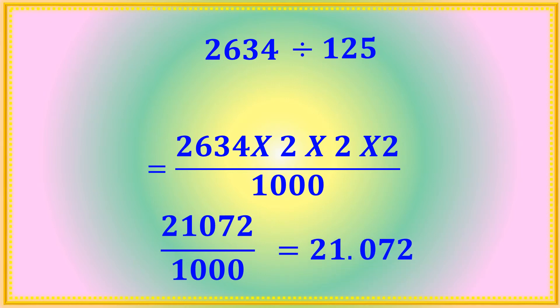Since the denominator is 1000 (three zeros), you put a decimal point after three digits from the right: one, two, three — giving 21.072. So the answer is 21.072 when you divide 2634 by 125.